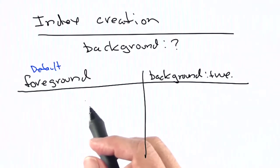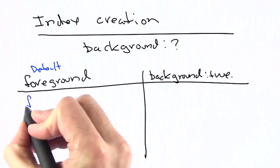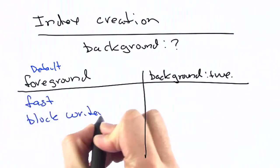So if you run it in the foreground, it's going to be faster. Foreground index creations are fast, but it's going to block writers.